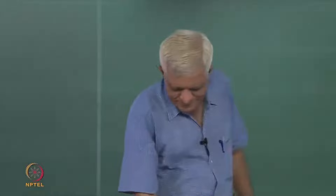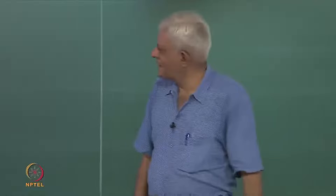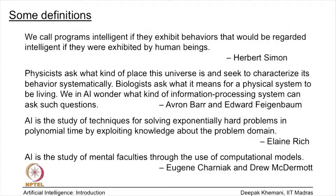Let us look at another old definition, by Barr and Feigenbaum, also two old-timers in AI. Their definition says that physicists ask what kind of place the universe is, biologists ask what it means for a physical system to be living, and we in AI wonder what kind of information processing system can ask such questions. In other words, he is asking about the kind of system that would be intelligent in that sense.